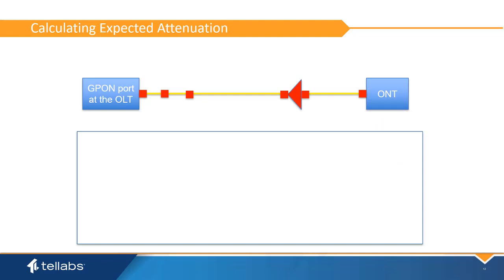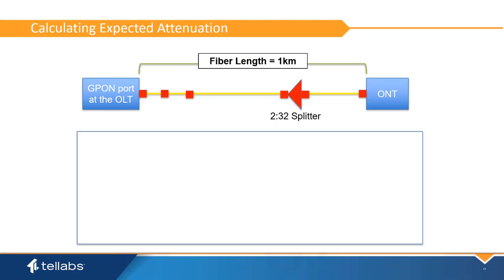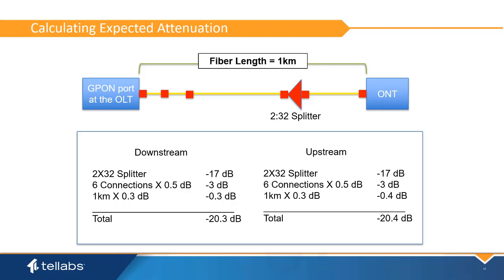Here is an example of a fiber plan using a 2x32 splitter, 6 connection points, and a full kilometer of fiber between the OLT and the ONT. Downstream, this plan should have 20.3 dB of loss. Upstream, it should have 20.4 dB of loss. This fits within our loss budget of 14 to 28 dB. If these numbers fell outside of the loss budget, the plan would have to be modified.